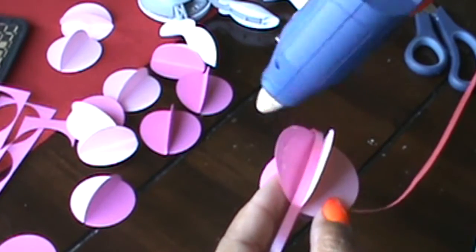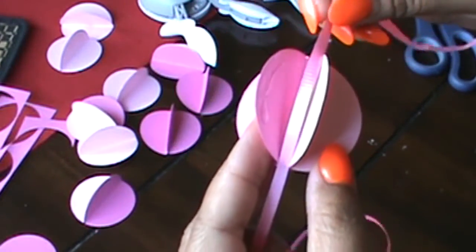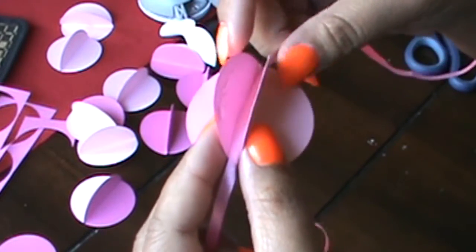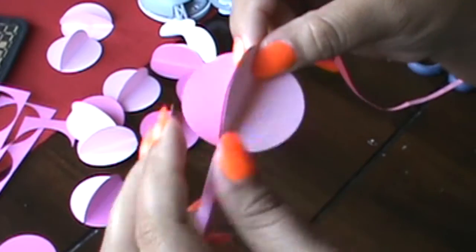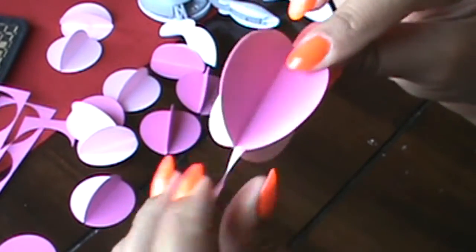Don't get it anywhere in the middle because we want to be able to move the 3D garland circles back and forth on the ribbon. So after you put the glue there, squeeze it together, let it dry for like a couple of seconds.